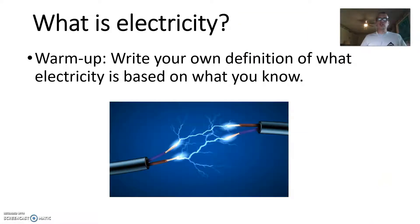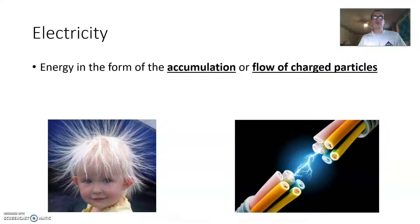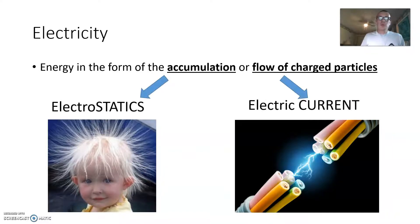Well, it works with the idea of electricity. And so electricity is nothing more than the accumulation or flow of charged particles. Accumulation, like the kid with the staticky hair, the flow, like when you turn the switch on. And so when we talk about electricity, we have to know a little bit about atomic physics. We have two branches. We have electrostatics, like static on your hair. That's where the word comes from, by the way. And we have electric current.